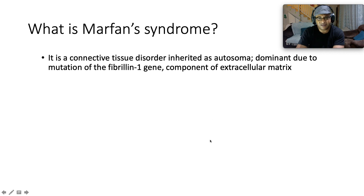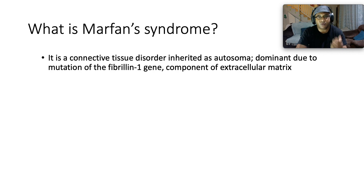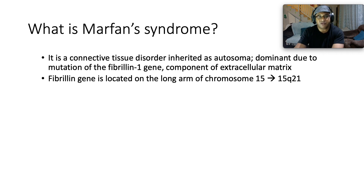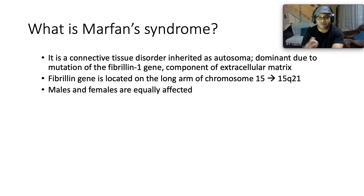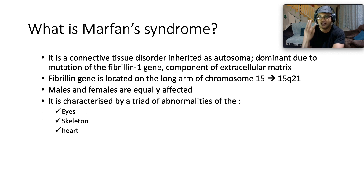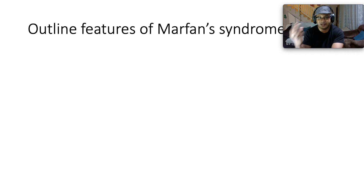What is Marfan syndrome? It is a connective tissue disorder inherited in an autosomal dominant pattern due to mutation of the fibrillin-1 gene, which is a component of the extracellular matrix. The fibrillin gene is located on the long arm of chromosome 15, precisely at chromosome 15q21. Males and females are equally affected — no predilection for any specific gender. It is characterized by a triad of abnormalities: eyes, skeleton, and heart.